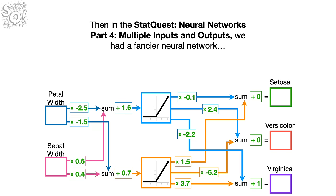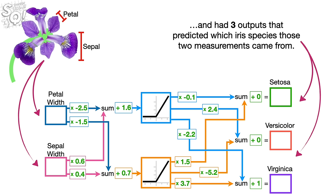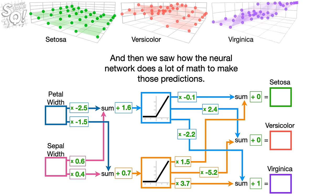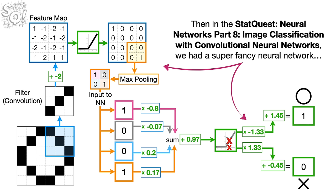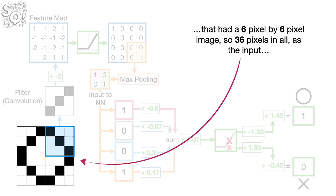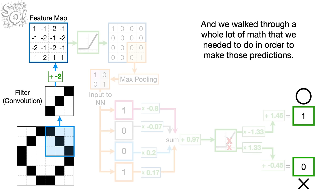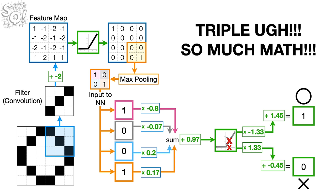Then, in the StatQuest Neural Networks Part 4, Multiple Inputs and Outputs, we had a fancier neural network that had two inputs that corresponded to two different flower measurements, and had three outputs that predicted which Irish species these two measurements came from. And then we saw how the neural network does a lot of math to make those predictions. Double-UG. More math. Then, in the StatQuest Neural Networks Part 8, Image Classification with Convolutional Neural Networks, we had a super-fancy neural network that had a 6-pixel by 6-pixel image, so 36 pixels in all, as the input, and two outputs that predicted whether the image was of an X or an O. And we walked through a whole lot of math that we needed to do in order to make those predictions. Triple-UG. So much math!